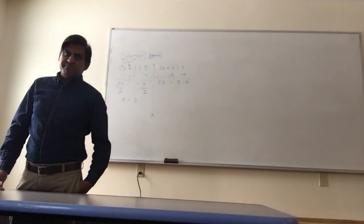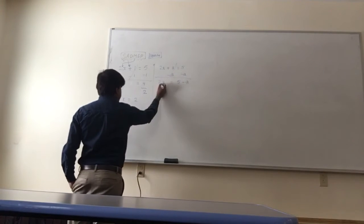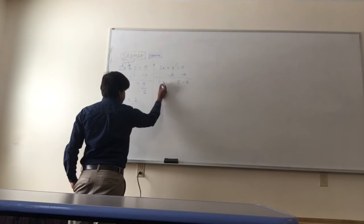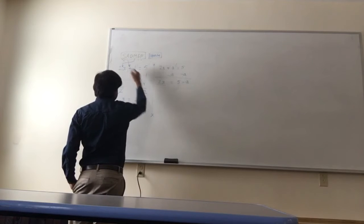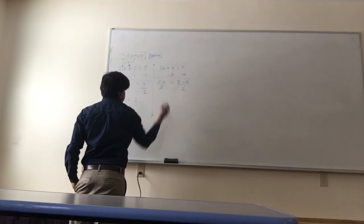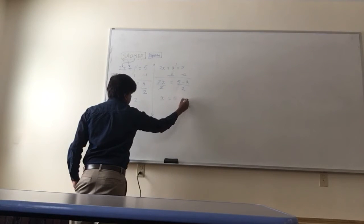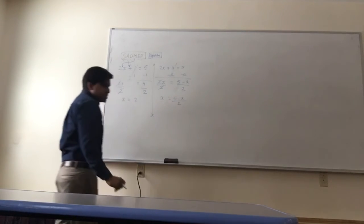You cannot subtract 5 and a, so leave it as 5 minus a. Now we see a multiplication. What do you do to the multiplication? You divide.